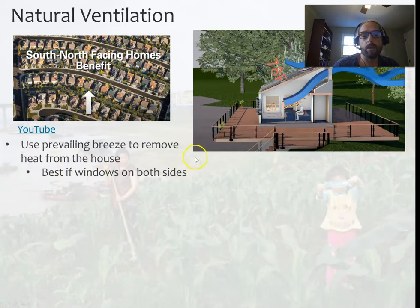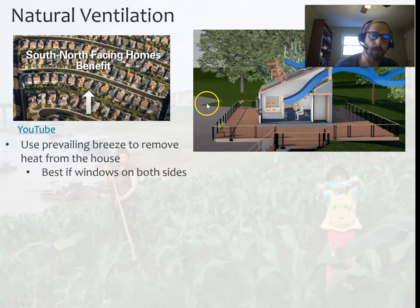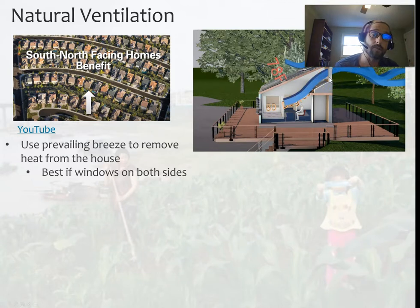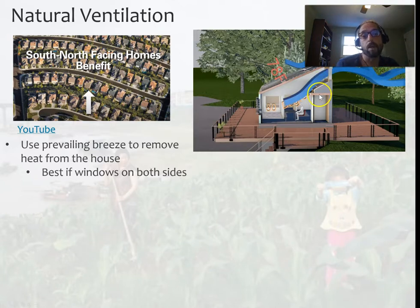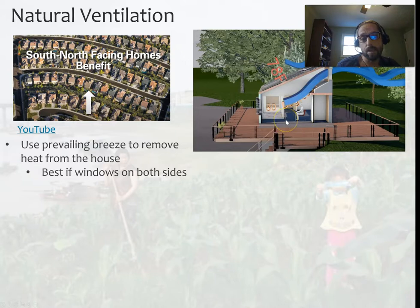The key for natural ventilation is to have windows that you can open. In this image, you have the breeze blowing through and entering on one side, and you want to open windows on the other side of the building as well to allow it to go all the way through. What it does is basically pull the heat away from the building. This is particularly good at night if it cools down, but it can also be useful during the day — you can have a hot day with a cool breeze and take advantage of that.